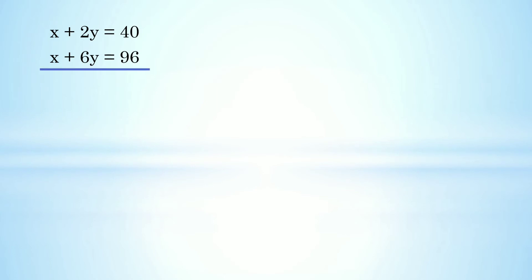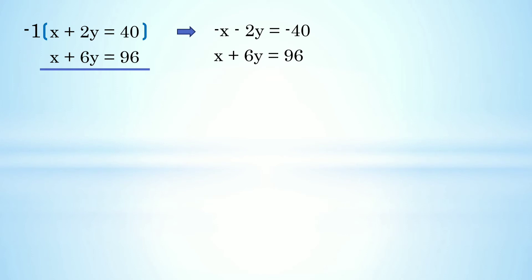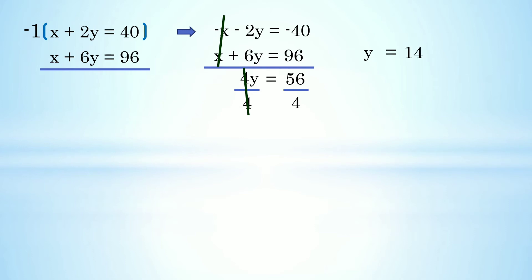Ang ginamit ko po dito ay elimination method. Kung gusto nating eliminate si x, magmumultiply po tayo ng negative 1 sa ating first equation. Negative 1 times x is negative x, negative 1 times 2y is negative 2y, and negative 1 times 40 is negative 40. Pwede na nating i-cancel si x. Add the remaining: negative 2y + 6y = 4y, and negative 40 + 96 = 56. Divide both sides by 4: y = 56 ÷ 4 = 14.